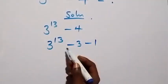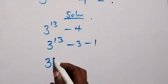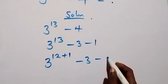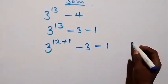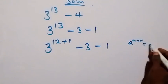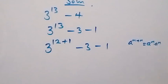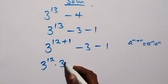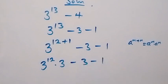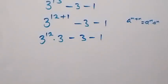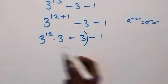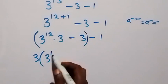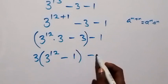We can write this power as 3 raised to power 12 plus 1, then minus 3 minus 1. That is from the law of indices: a raised to power n plus m is the same as a raised to power n times a raised to power m. So here we have 3 raised to power 12 times 3 raised to power 1, which is times 3, then minus 3 minus 1. Then we can factor 3 out from these two terms, bringing 3 out, leaving 3 raised to power 12, then 1, then minus 1.